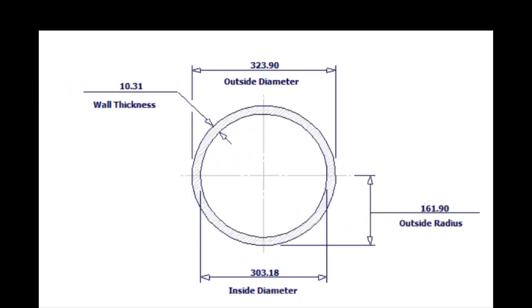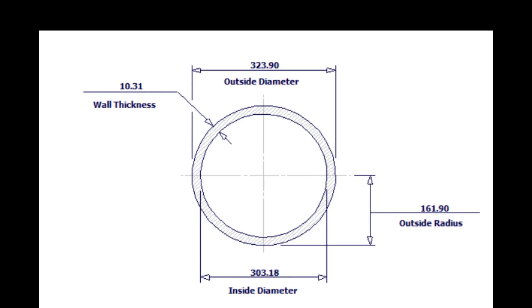Outside diameter of a 12-inch pipe is 324 millimeters. Let us calculate the circumference. Multiply 324 into 3.14. The answer is 1017 millimeters.